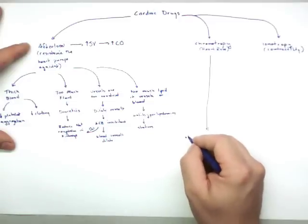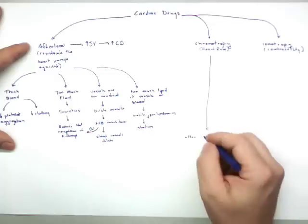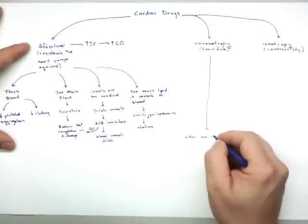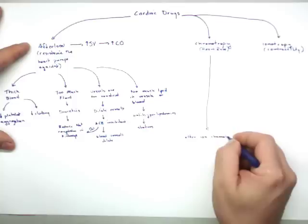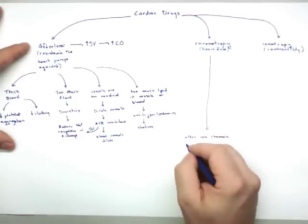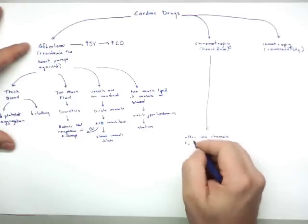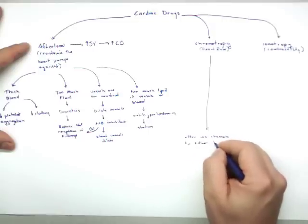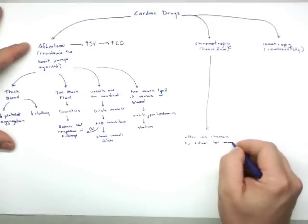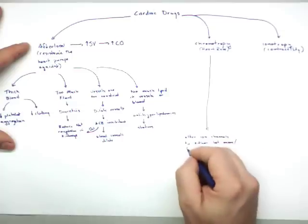Chronotropic drugs alter ion channels to either let more ions flow, more or less ions flow.